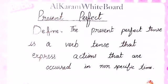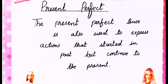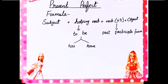Non-specific time yaani koi aisa time jo specific na ho lekin waqia pesh aaya ho. Iski doosri definition bhi hai: the present perfect tense is also used to express actions that started in the past but continue to the present. Aise actions ko hum express kar sakte hain jo ke humne guzre hue zamane mein start kiye the — shuru kiya tha — lekin woh abhi bhi hal mein jaari hain, woh kaam abhi mukammal nahi hue.